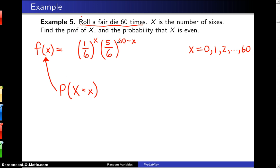What you see right there is the probability of X sixes and 60 minus X non-sixes in a particular order.